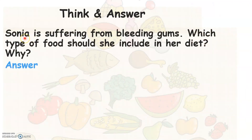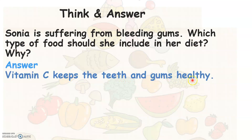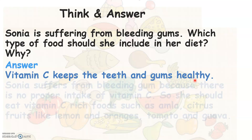In this case, Sonia is suffering from bleeding gums. Which type of food should she include in her diet, and why? Vitamin C keeps the teeth and gums healthy. Sonia suffers from bleeding gums because there is no proper intake of vitamin C by her body. So she should eat vitamin C rich foods such as amla, citrus fruits like lemon and oranges, tomatoes, and guava.